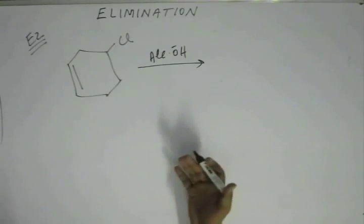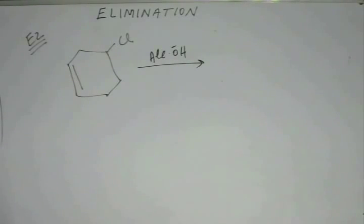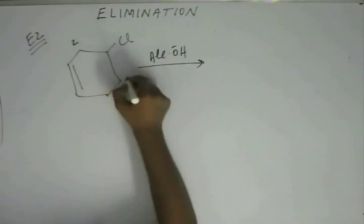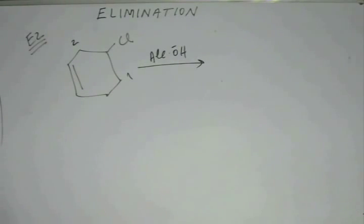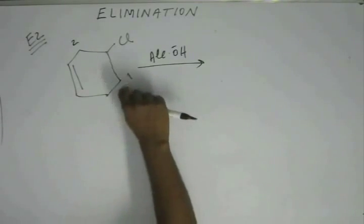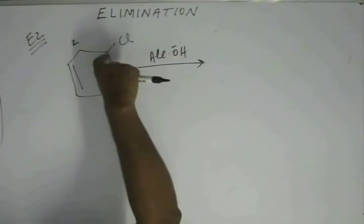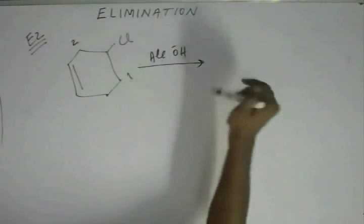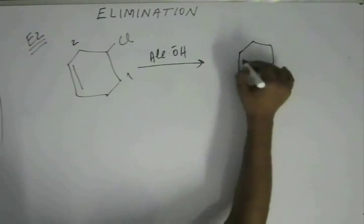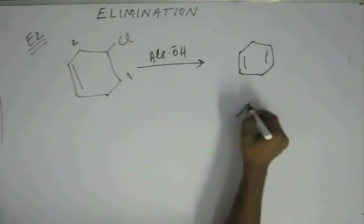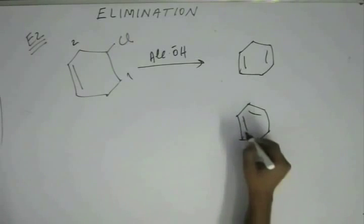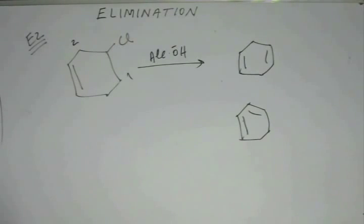Let's draw both products first. If we abstract hydrogen from beta position one, the charge is pumped into the antibonding orbital of the C–Cl bond, the leaving group leaves, and a new pi bond forms at that position — giving one product. Similarly, abstracting from beta position two gives a second product. Now, which product is the major one? The most stable product is the major product.